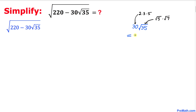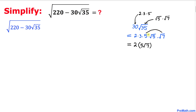So therefore we can write this whole thing as 2 times 3 times 5 times square root of 5 times square root of 7. Now let me rearrange these numbers. I can write this as 2 times, and then I'm going to connect 5 times square root of 7, and likewise connect 3 times square root of 5.